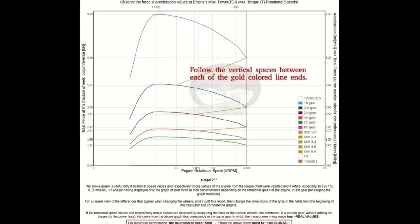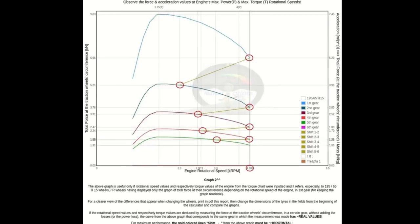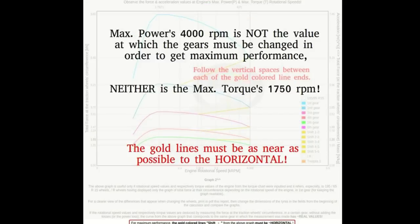Seven: The maximum power doesn't give the shifting RPM, neither does the maximum torque. The shifting RPM is given by the torque curve and gear ratios. As you can see here, the gold-colored lines must be as near as possible to the horizontal.